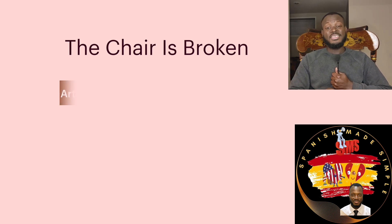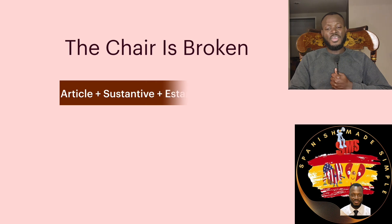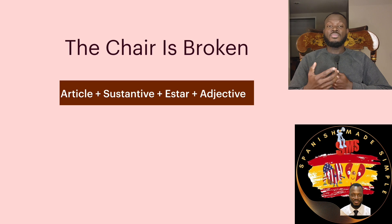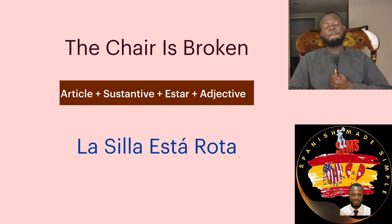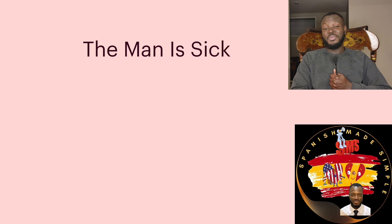Let's say 'the chair is broken.' Just translate word by word and put it there. 'The' is 'la,' 'chair' is 'silla,' 'is' is 'está,' 'broken' is 'rota.' So it's: 'La silla está rota.' The chair is broken now, but I might fix it tomorrow — it was not broken before. That's for something temporary; it's not there forever.